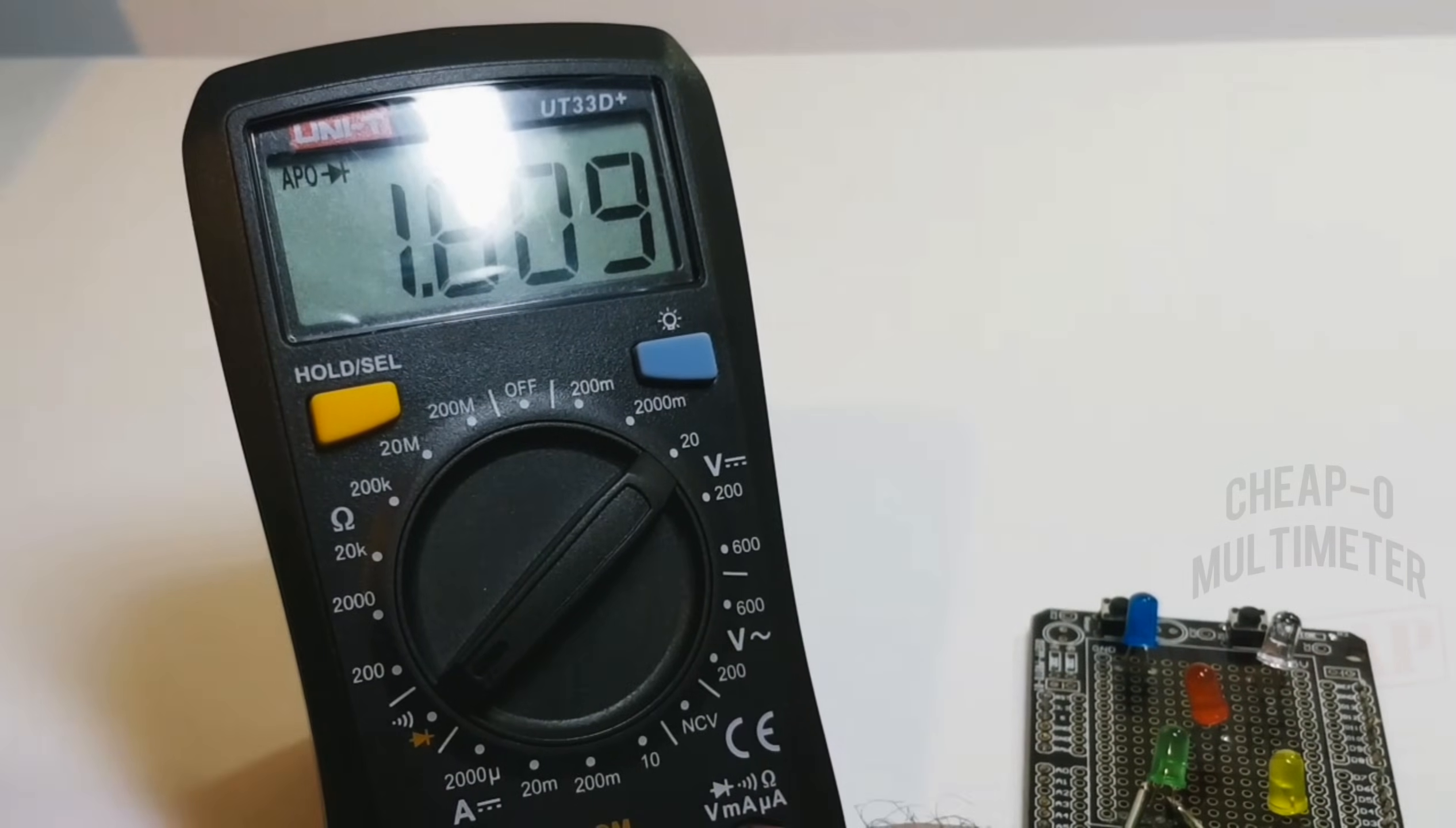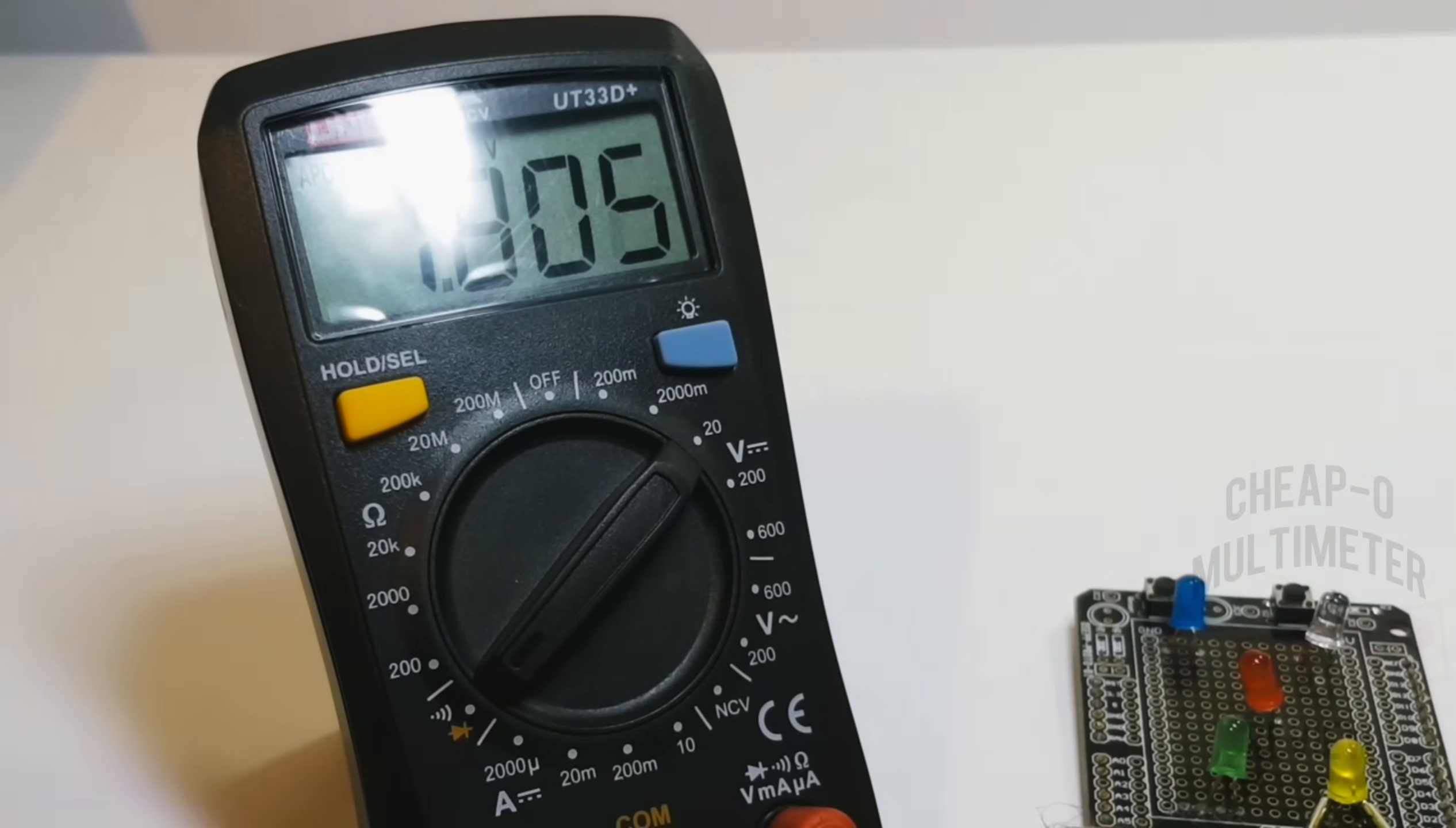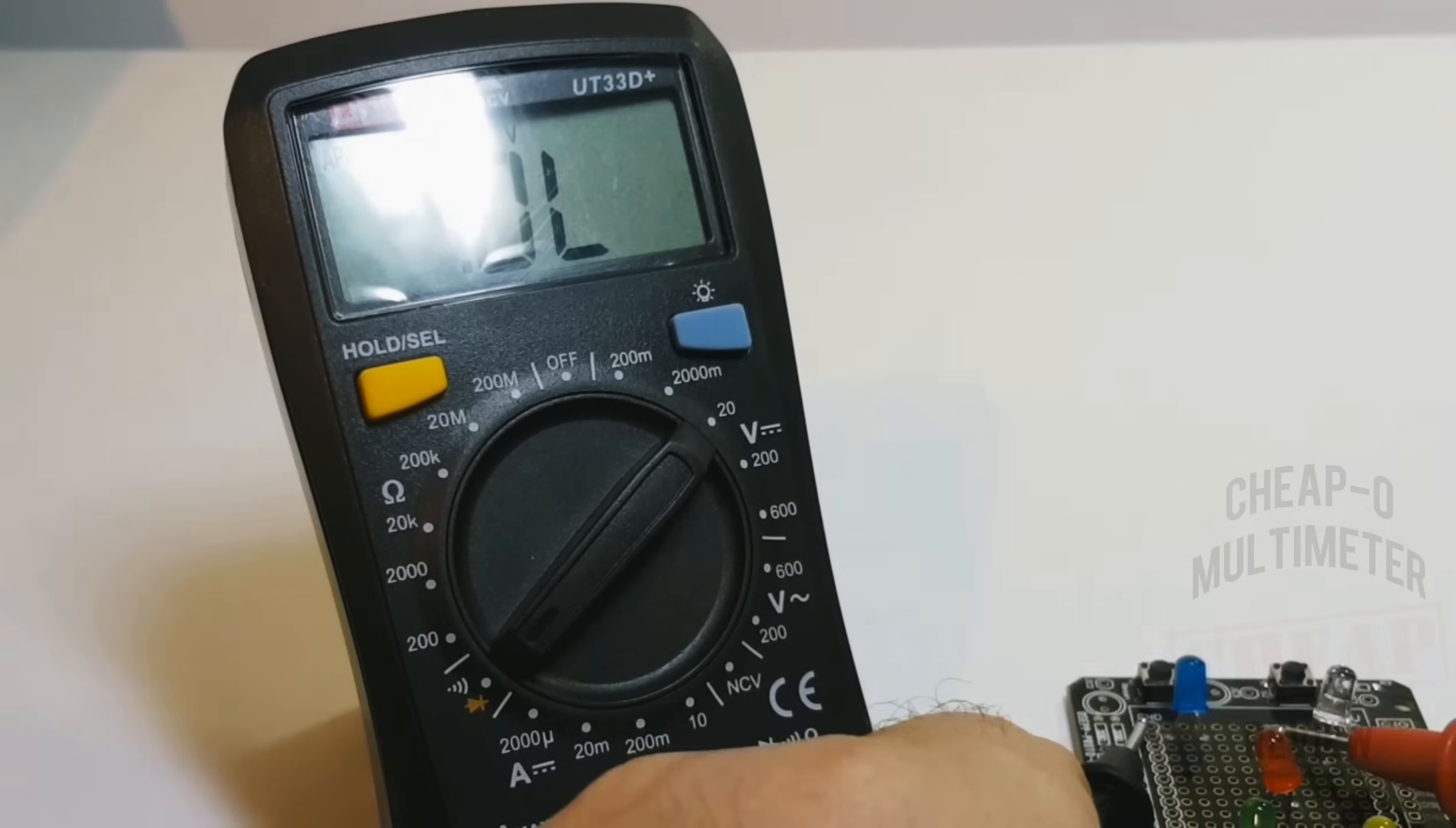Starting off with the green LED, it is barely lit up but it is lit up, and we do have that forward voltage drop. Off to the yellow, and same thing. Moving down to the red, looking good so far. Three for three.